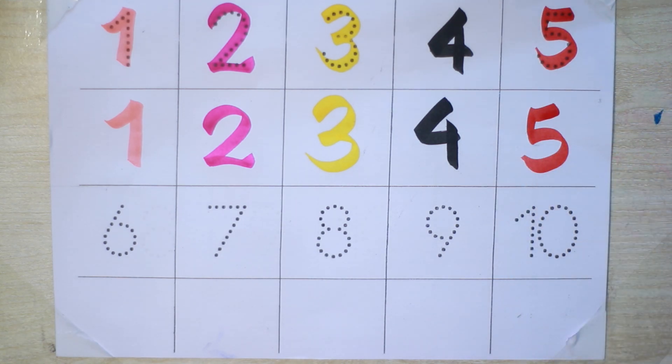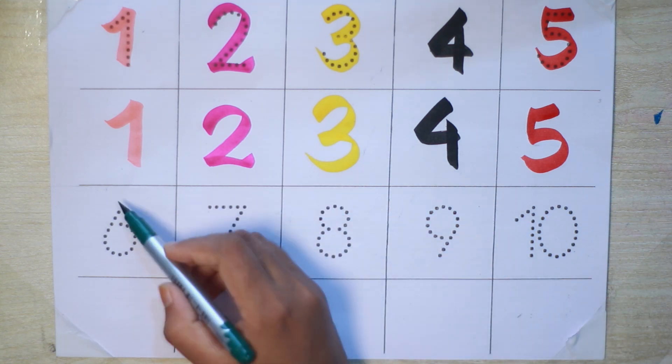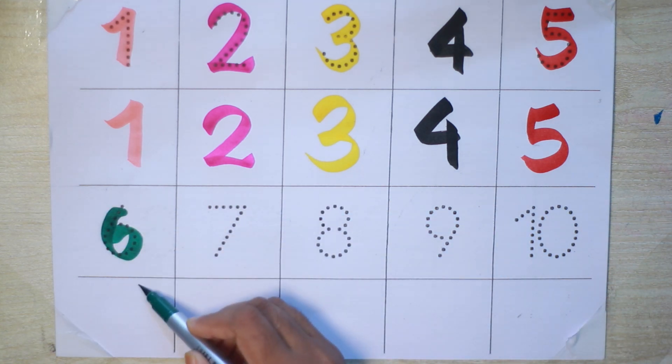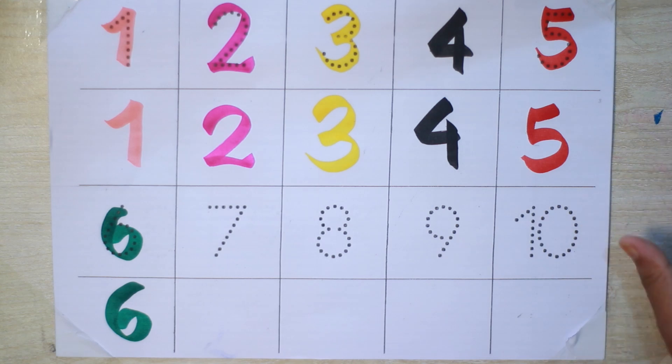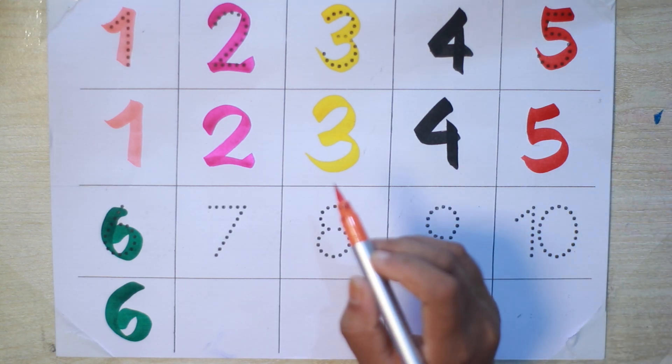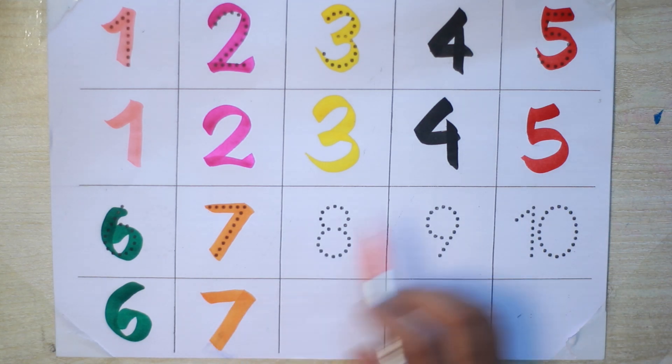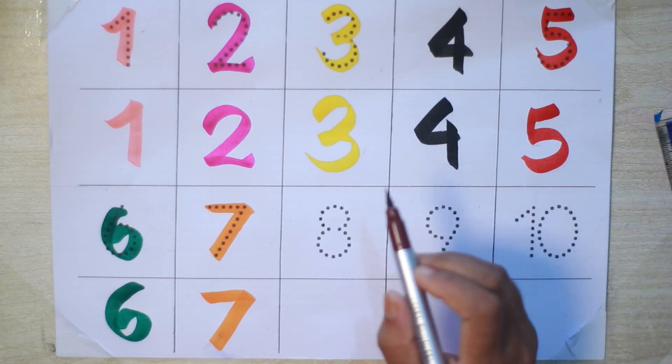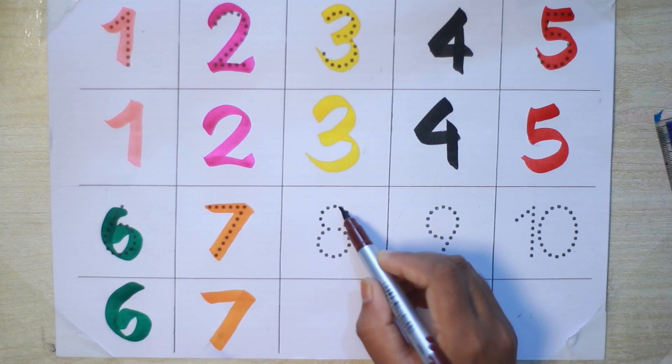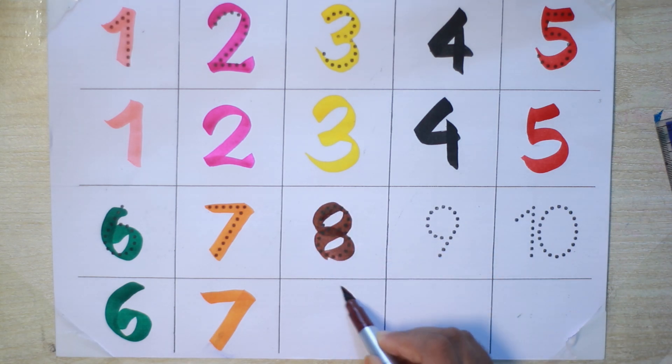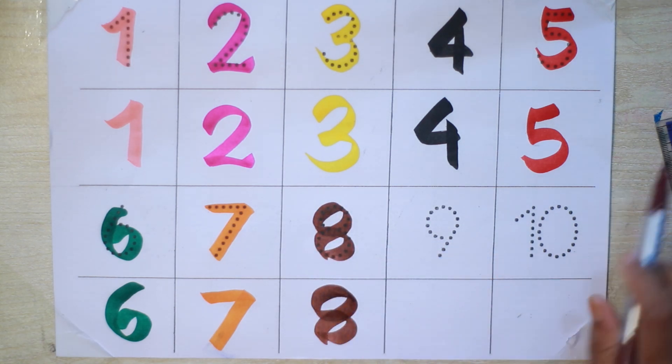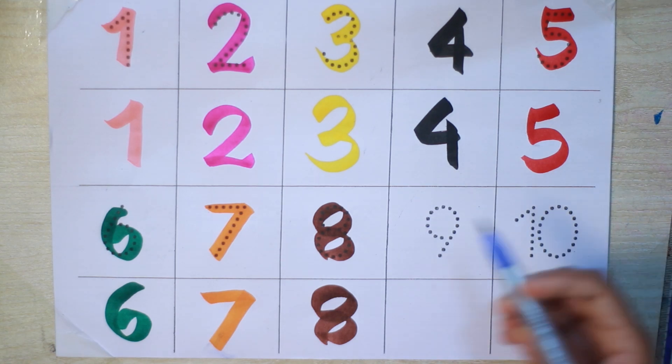Green color six, six, six. Orange color seven, seven, seven. Brown color eight, eight, eight.